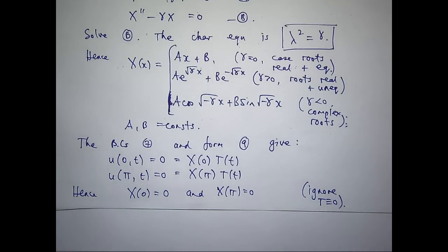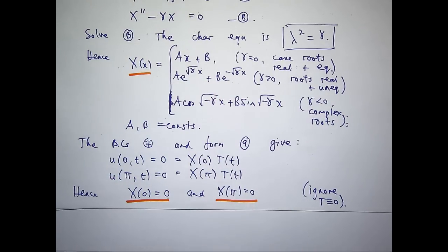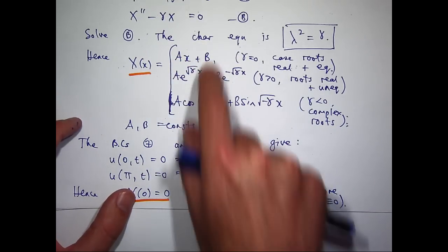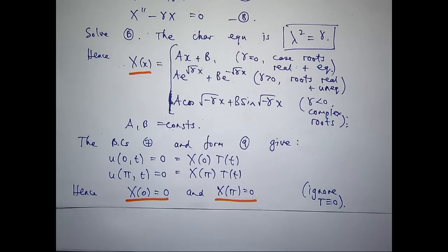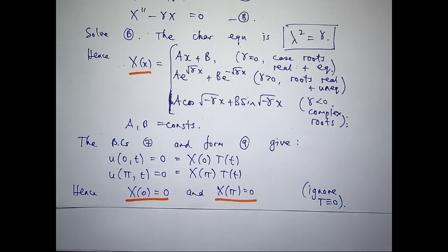Ignore the case where big T is identically zero because that gives the trivial solution. For the first case when gamma equals zero, we get b equals 0 from the first boundary condition, and then the second gives a pi plus b equals 0; since b is 0 and pi can't be 0, a must be 0. So gamma equals zero just gives big X equals zero — the trivial solution. Not interested.